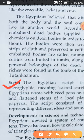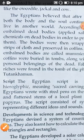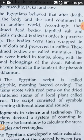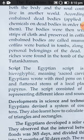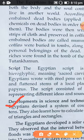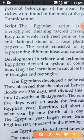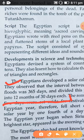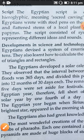The Egyptian script is called hieroglyphic, meaning 'sacred carving' — that is all you need to understand about the script. In science and technology, the Egyptians developed a solar calendar. They observed that the interval between two floods was 365 days, and divided this period into 12 months of 30 days each.